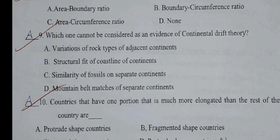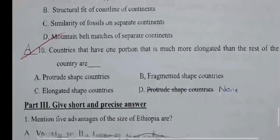Question number nine: Which one cannot be considered as evidence of continental drift theory? A: Variation of rock type of adjacent continents. B: Structural fit of coastline of continents. C: Similarity of fossils on separate continents. D: Mountain belt matches of separate continents. The correct answer is A.